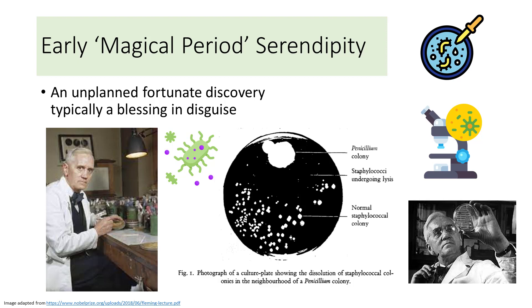How does it all begin? The spark of innovation and discovery might well be explained as the early magical period of serendipity, which is defined as an unplanned fortunate event of discovery of something pleasant. One famous example occurred back in 1928 at St. Mary's Hospital, London, where Alexander Fleming discovered penicillin.